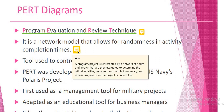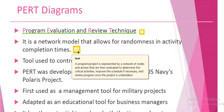A PERT diagram actually represents a network model where the program or project is represented by a network of nodes and arrows that are then evaluated to determine the critical activities, improve the schedule if necessary, and then review the progress once the project is undertaken.